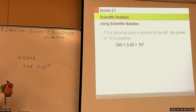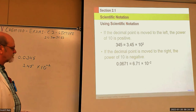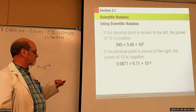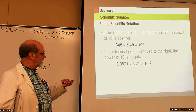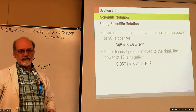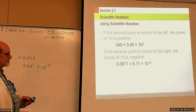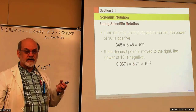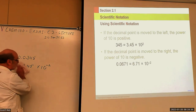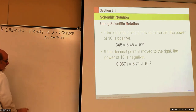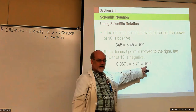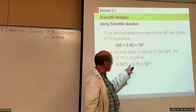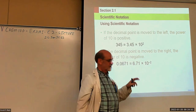Here are some other examples: 0.067 — moving the decimal to the right makes the coefficient bigger, so you get a negative power. We can also go backwards, taking scientific notation back to standard notation. If you take a number and make the coefficient smaller, the power has to get bigger. You can use up those decimal places and get the original number back.